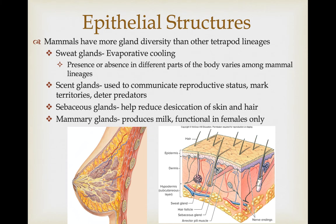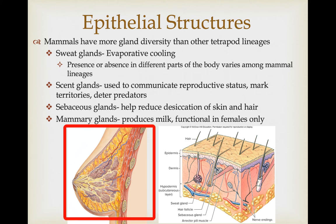Of all the tetrapods, mammals have the most diversity in their glands. They have sweat glands used in evaporative cooling — a wet surface absorbs heat from the body, and when wind evaporates that moisture, it draws heat away. The presence and distribution of sweat glands varies among mammals; dogs lack sweat glands over most of their body and must pant instead. Scent glands are used for communication of reproductive status, marking territories, or deterring predators — think of a skunk. Sebaceous glands keep skin from getting too dry and hair from becoming too brittle. And the mammary gland, for which mammals are named, produces milk for feeding young and is functional only in females.